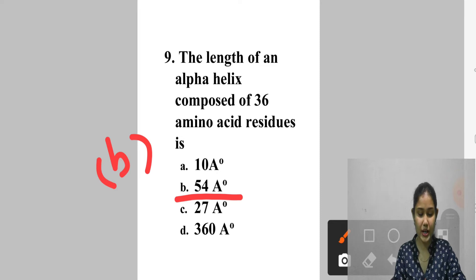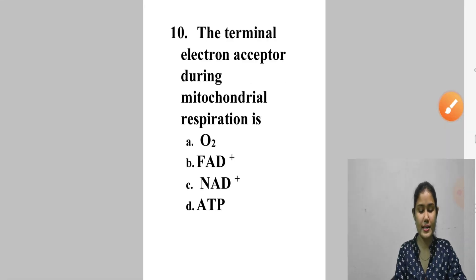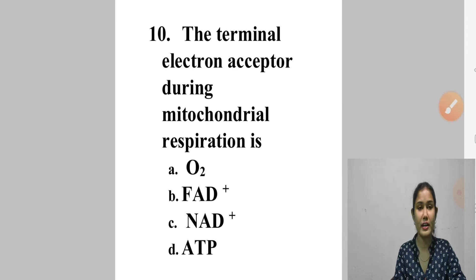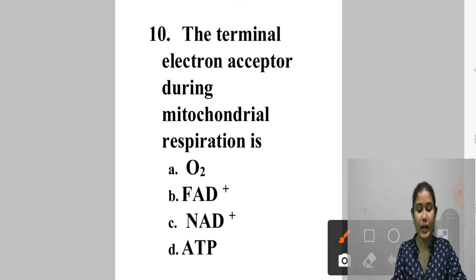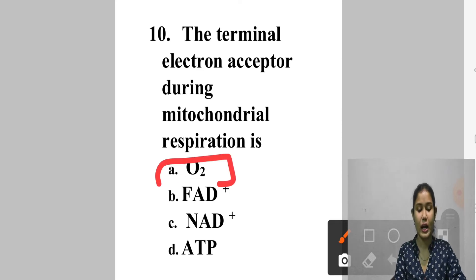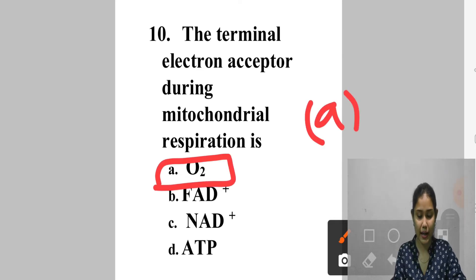Question 10: The terminal electron acceptor during mitochondrial respiration is — A. Oxygen, B. FAD+, C. NAD+, D. ATP. This is a basic question. Our terminal electron acceptor is oxygen. Answer is option A.